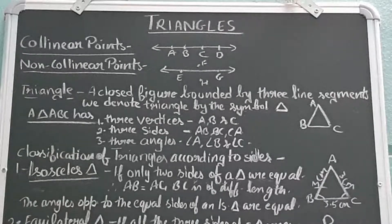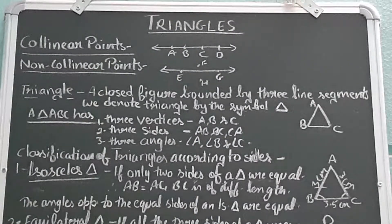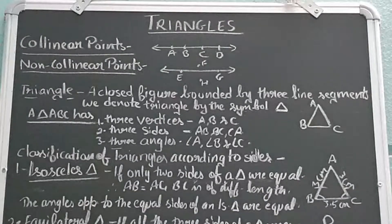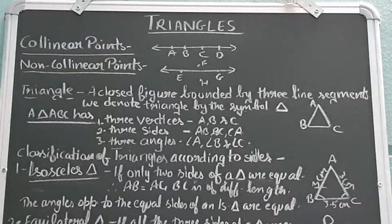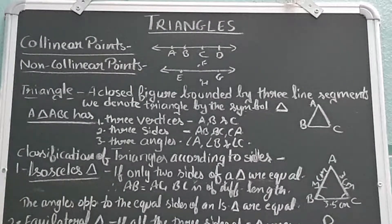A triangle is a closed figure bounded by three line segments. As I explained earlier, a line segment — for example line AB with measurement three centimeters — can be measured, unlike a line. This is the main difference between a line segment and a line. So a closed figure made up of three line segments is called a triangle, denoted by the triangle symbol.